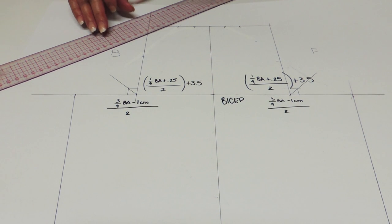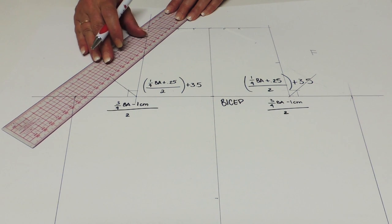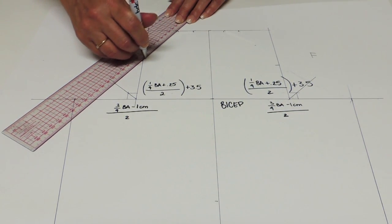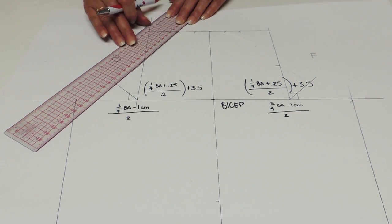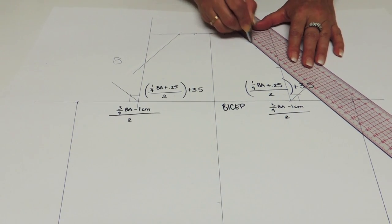To trace the guideline for the sleeve head, we're going to connect the half to the new point. Same thing for the back and the front. So the half to the new point.